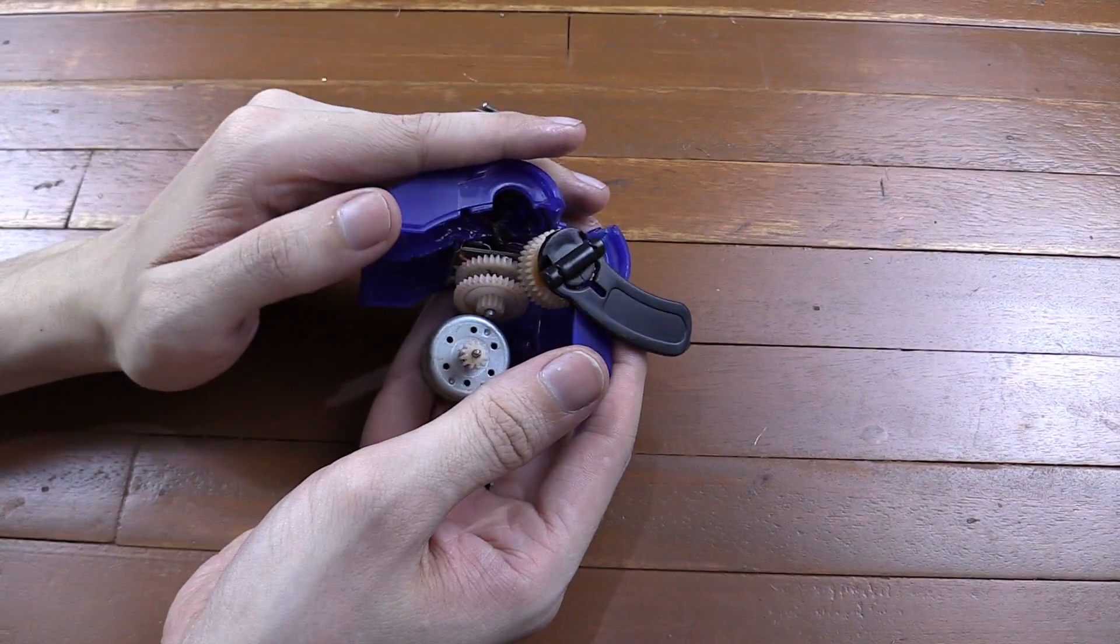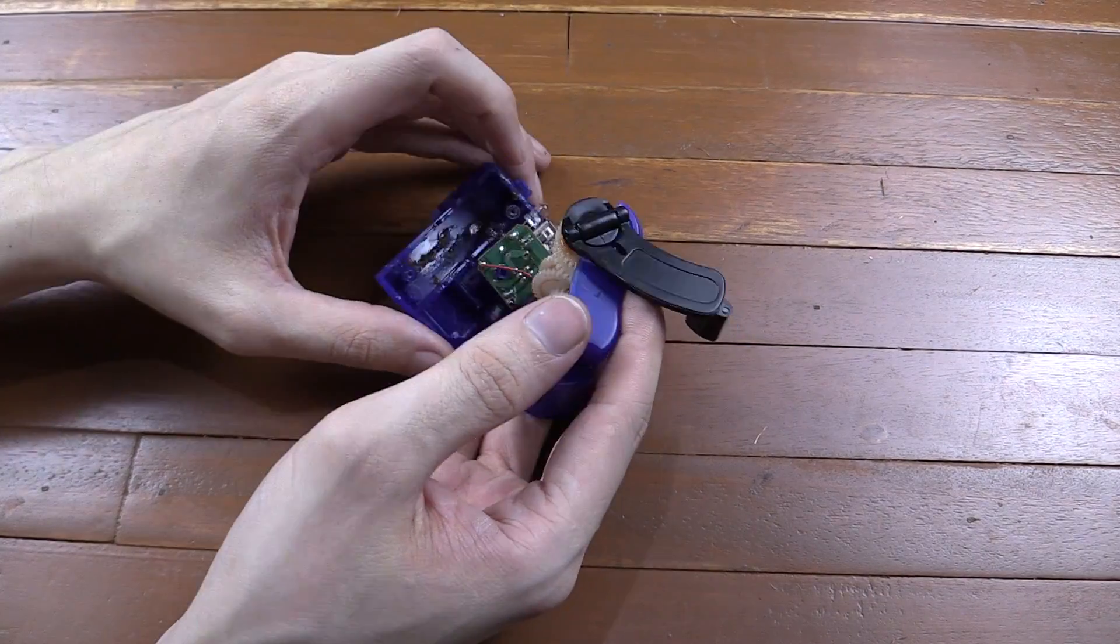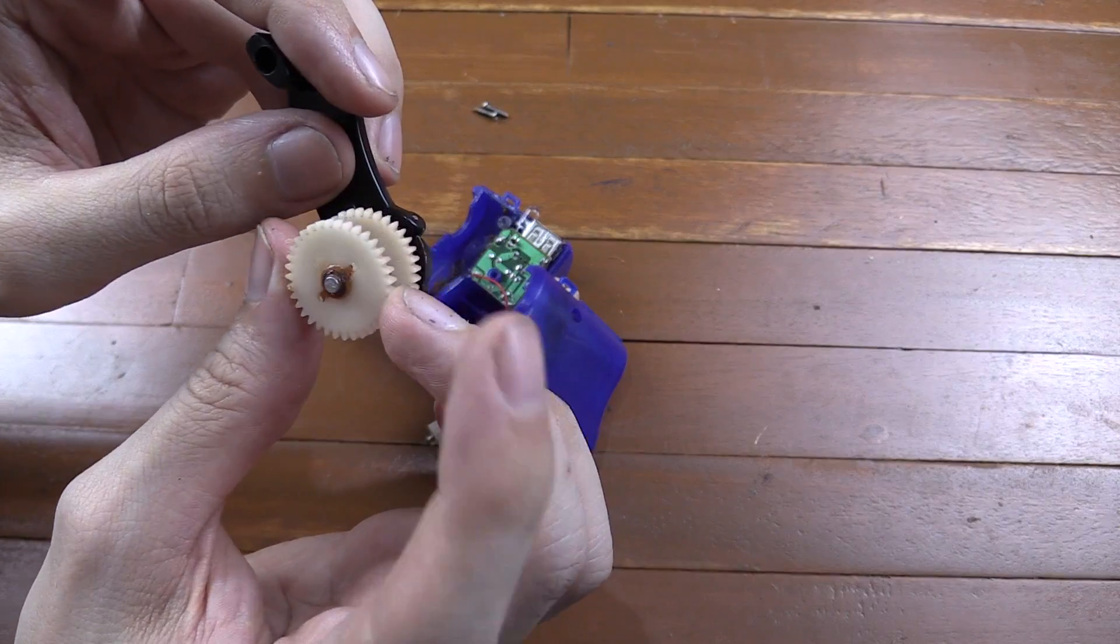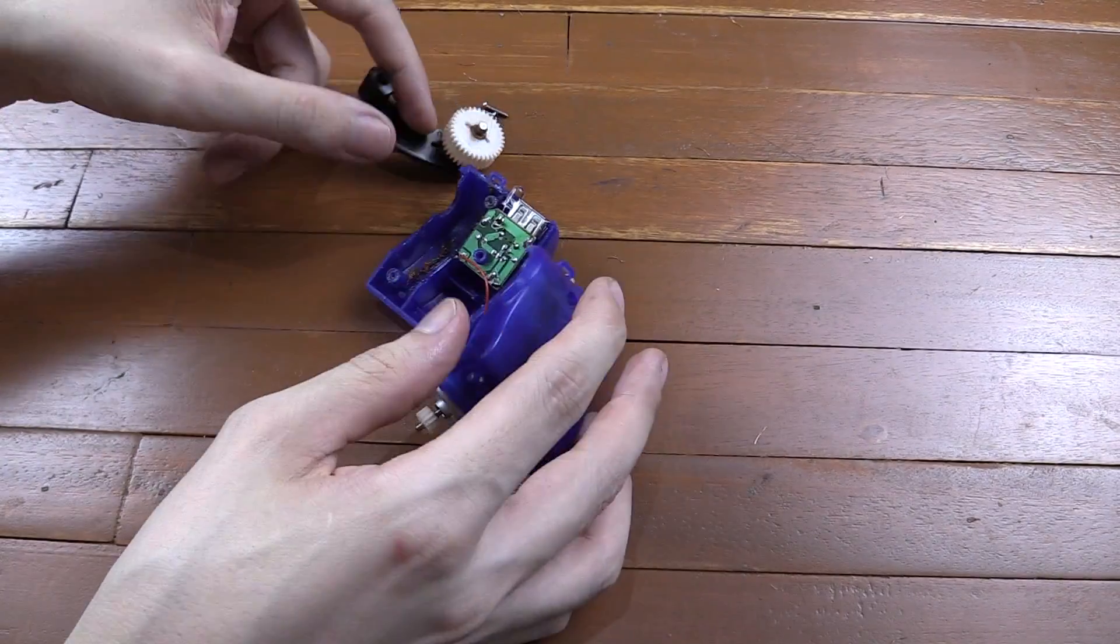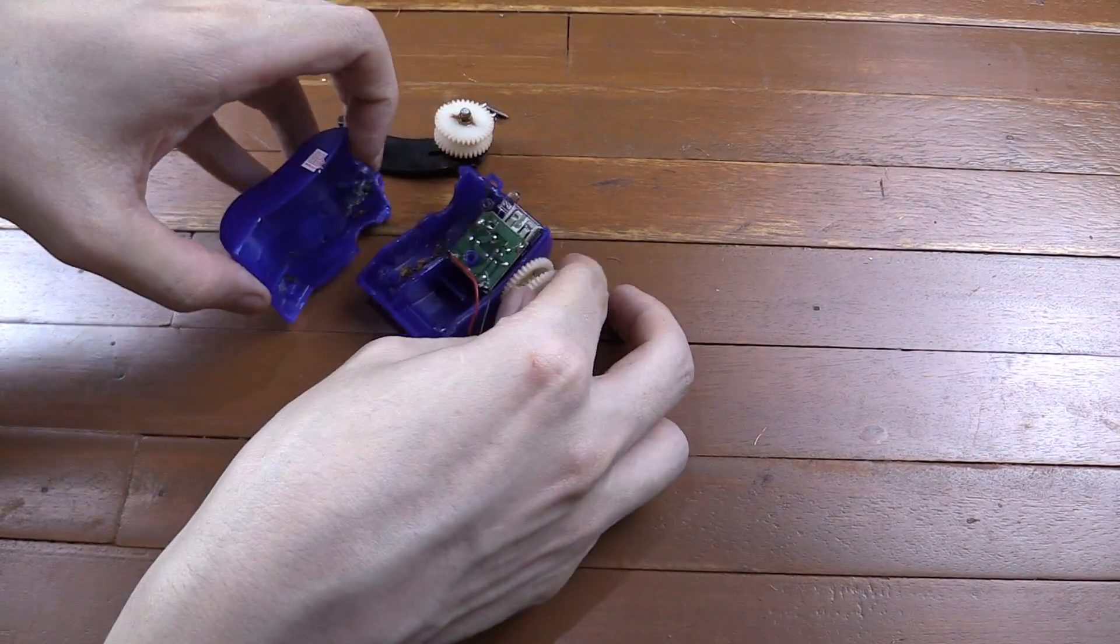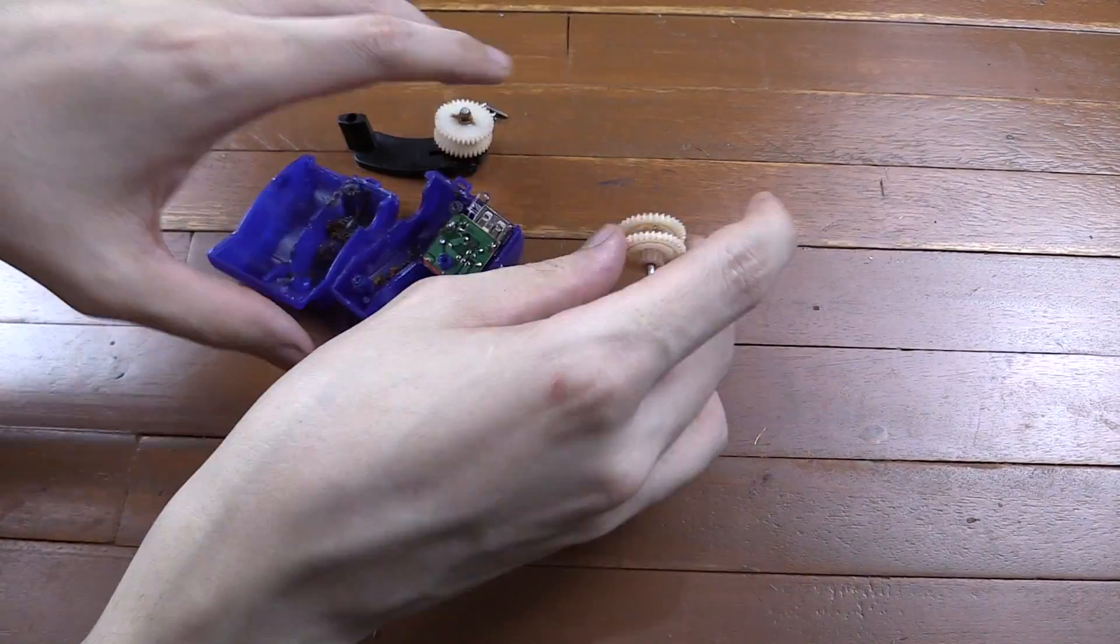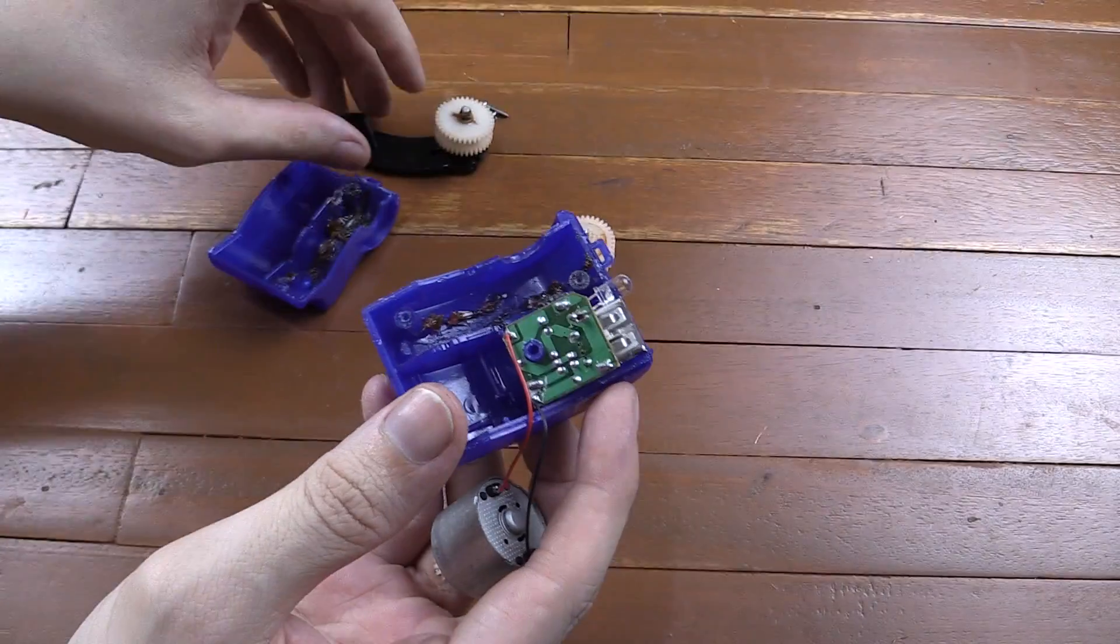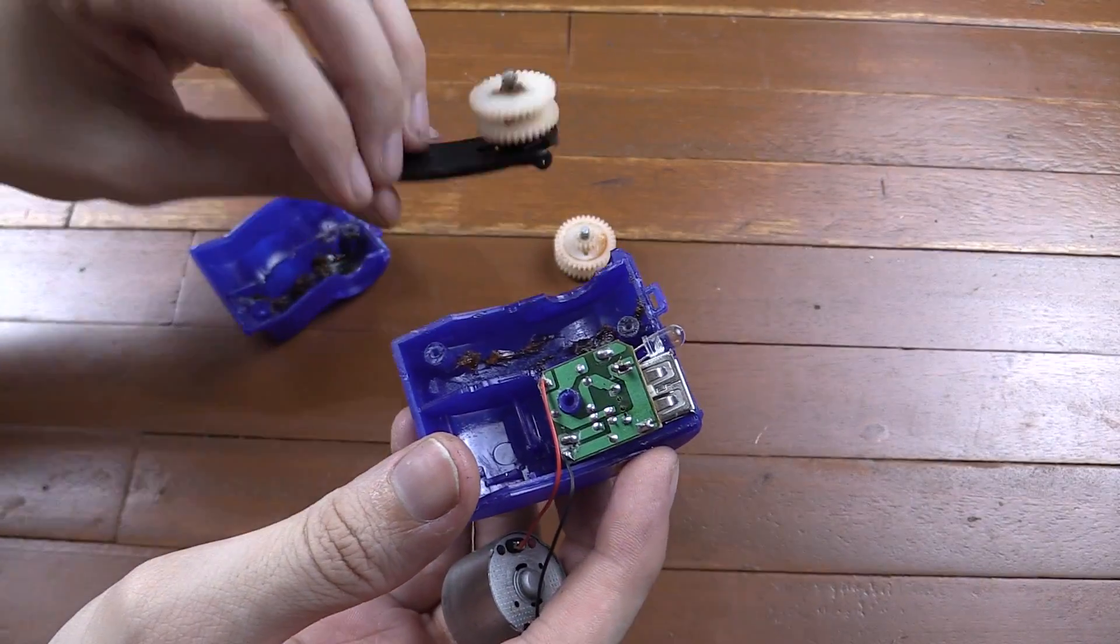So I think I managed to crack it open. We've got a couple of gears here, a few gears. You can see there's lots of grease inside here. At least they bother to actually grease the gears, that's something.